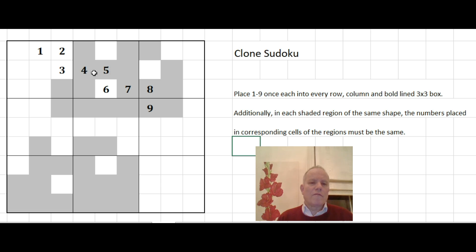They're identical which means the same numbers appear in the same positions in each of them. So up here we've got four, five, seven, eight, nine appearing in this shape. So in this shape that must be four, five, seven, eight, nine.